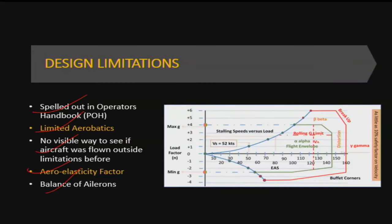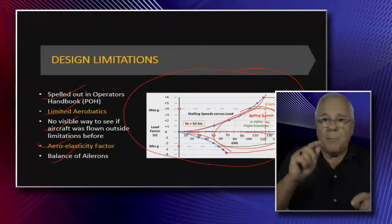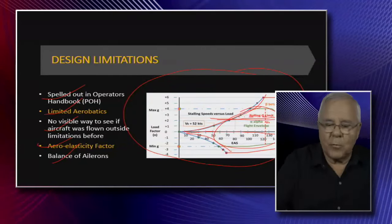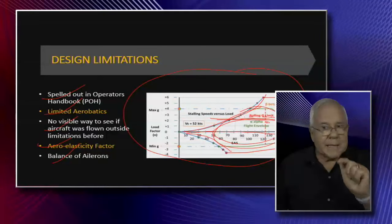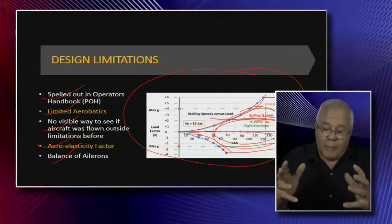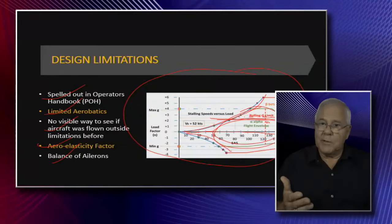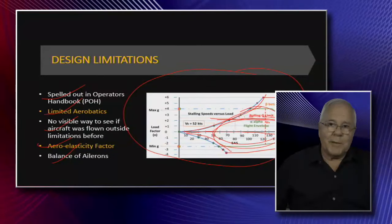I want to show the VN diagram — V for velocity, N for load factor, the amount of G's you pull. It shows maximum speed, stall speed, and the G limits that define the flight envelope. There is also a rolling G limit that makes the flight envelope smaller. That's advanced information not found in the basic training books, but you need to know about it to prepare yourself.